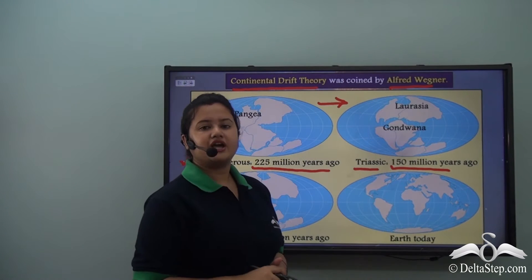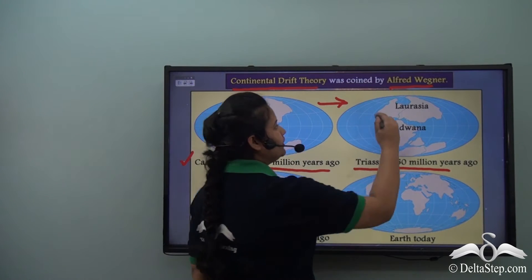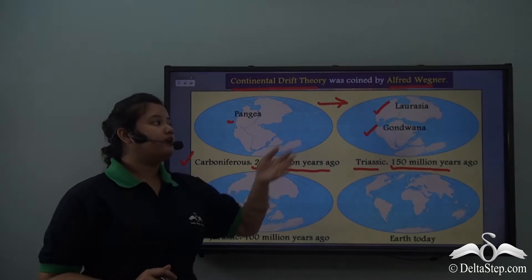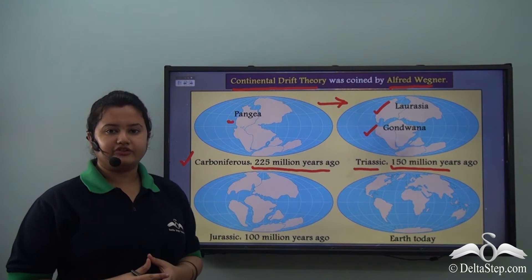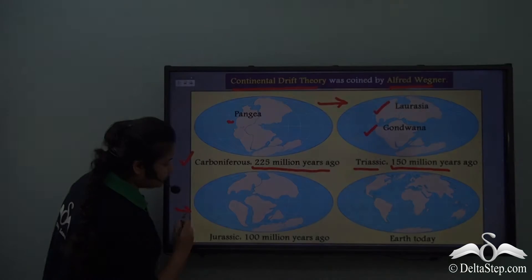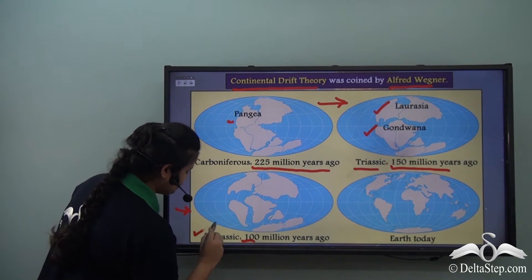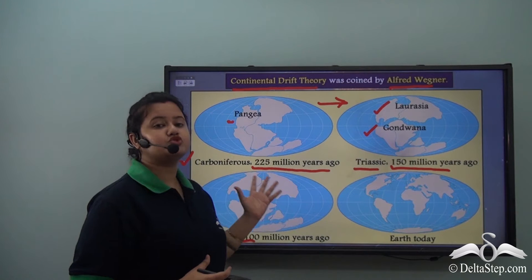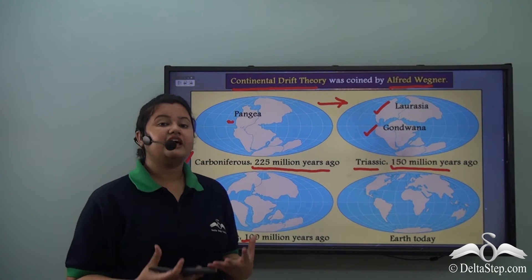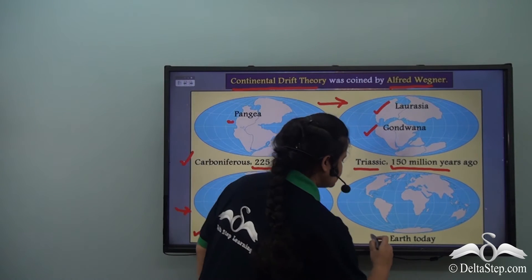In the Triassic period, Pangea bifurcated into two landmasses known as Laurasia and Gondwana. Now, Laurasia and Gondwana further bifurcated into smaller continents around 100 million years ago and this period is known as the Jurassic period. And finally, from the Jurassic period, the continents further divided and led to the formation of the new world where we live in today.